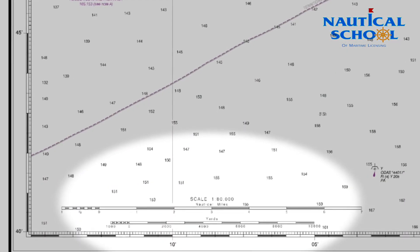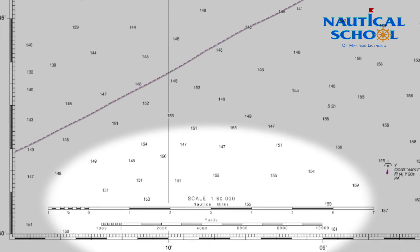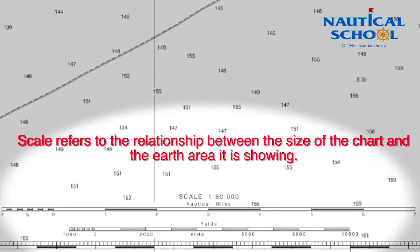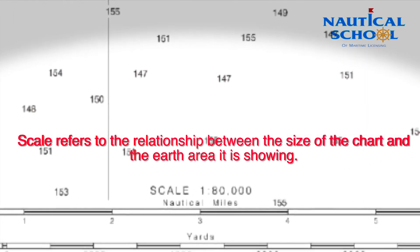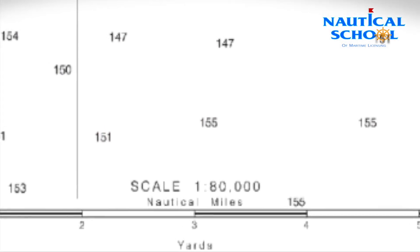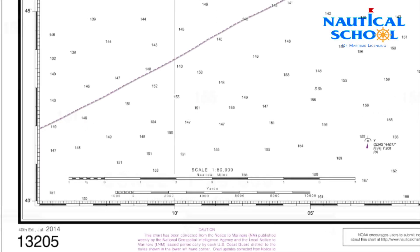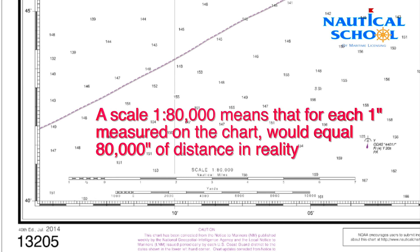The scale of the chart is also shown as an important feature in understanding how a chart is laid out. Scale is the ratio of distance used on a particular chart, whereby 1 to 80,000 would mean that the distance covered by 1 inch on that chart would require 80,000 inches in reality to reach that same distance.